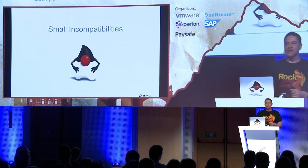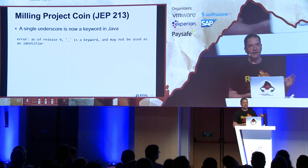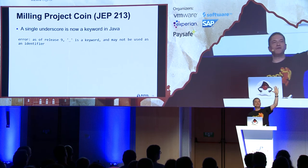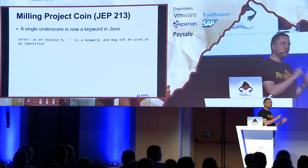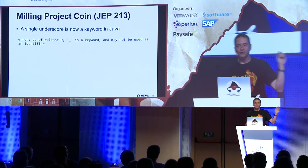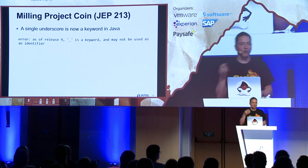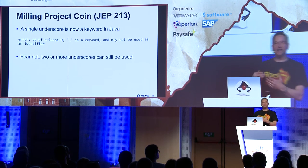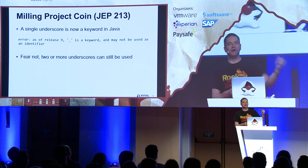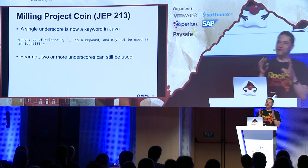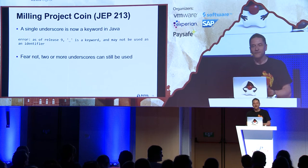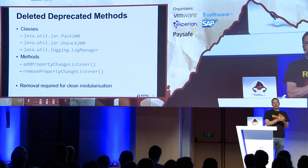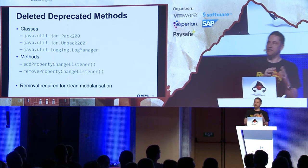Some small incompatibilities for JDK 9: a single underscore is now a keyword in Java. If you've used a single underscore as a variable name, you'll get the error: "as of release 9, '_' is a keyword and may not be used as an identifier." You can change it to two or more underscores and it will still work. JDK 9 has also started a cleanup of the Java platform, removing things that were deprecated in the past.